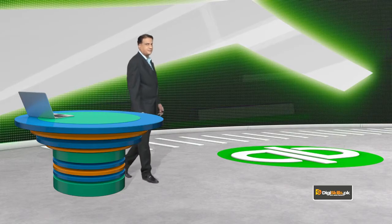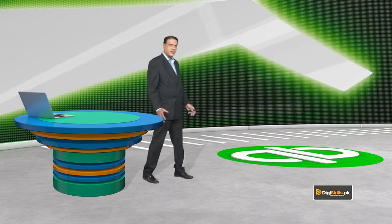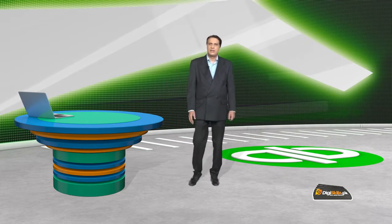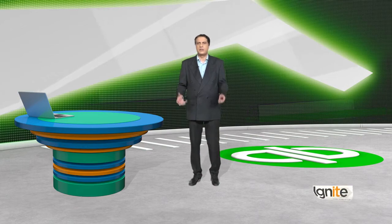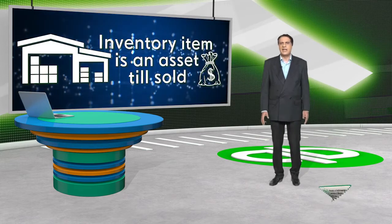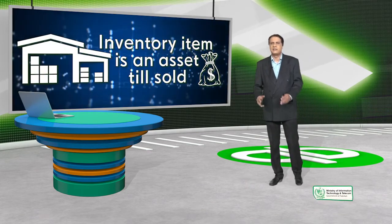Inventory item is basically the item that our business is running on. If we buy inventory items — whatever product is in our retail shop — then we buy inventory items. And you need to know that inventory item is recorded as a company asset.